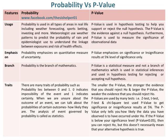If the p-value is below your significance level — that is, p-value less than 0.05 — then you can reject H₀. But this doesn't necessarily mean that your alternative hypothesis is true.